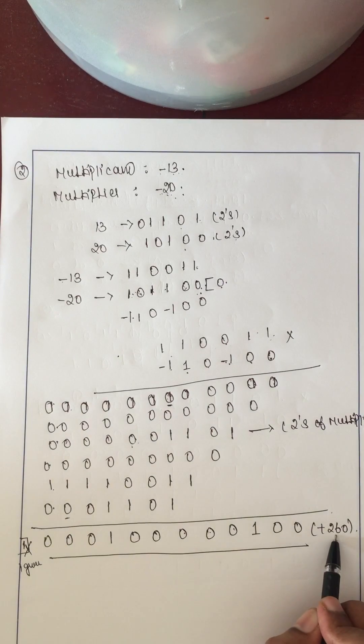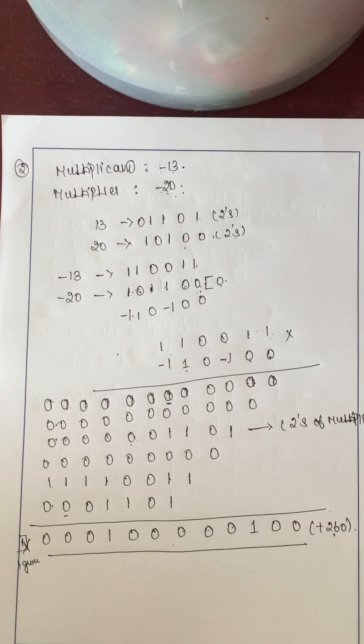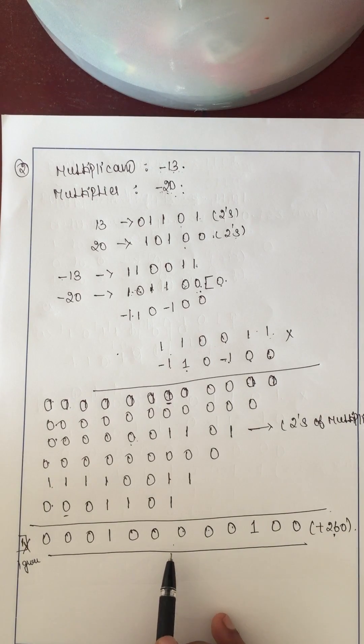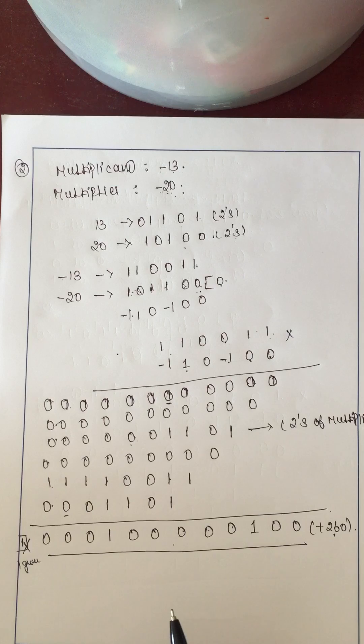The final result corresponds to 260, which you can cross-verify. This is how we multiply two values using Booth's algorithm. Thank you.